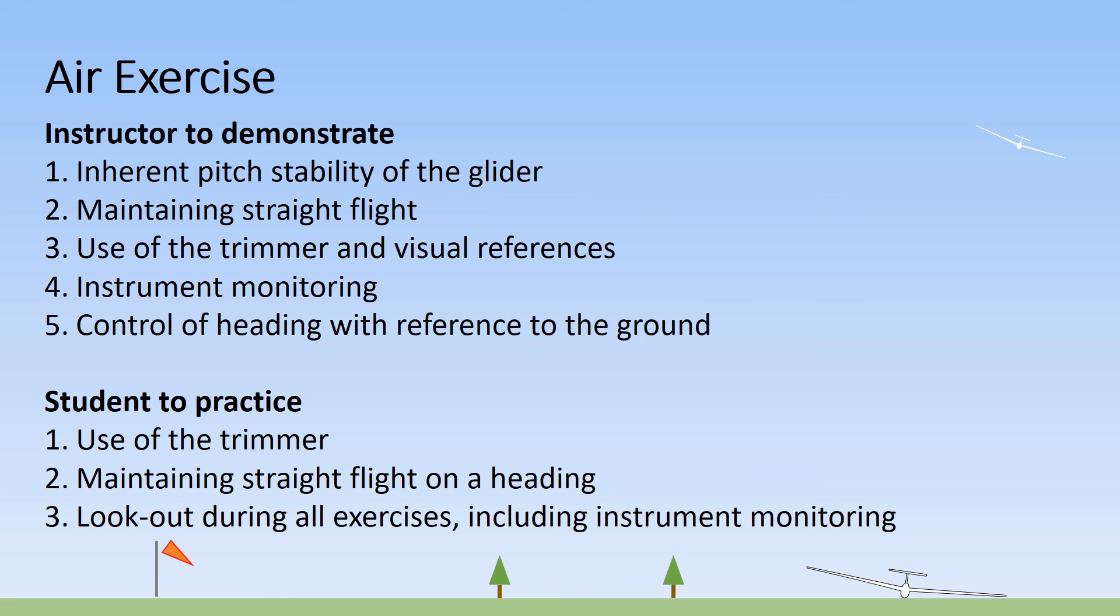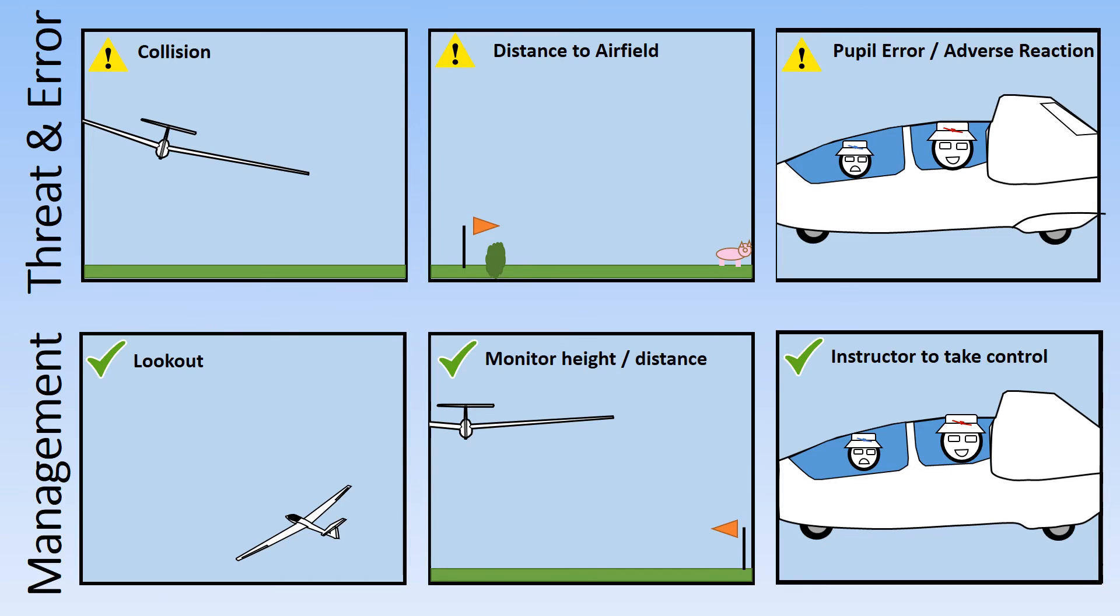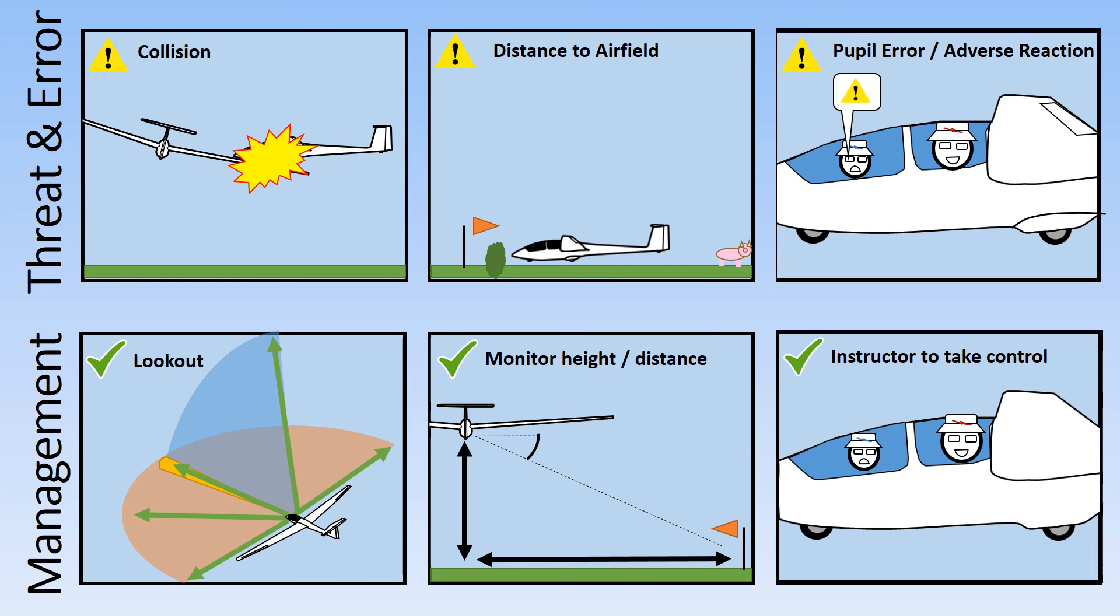At all times, good lookout is required including instrument monitoring. Threats and errors for this exercise are collision managed by good lookout, getting too far from the airfield, so monitor the height and distance relationship, especially when downwind, and pupil error or adverse reaction where the instructor will have to take control.